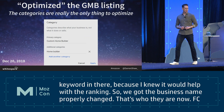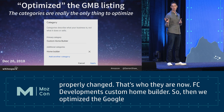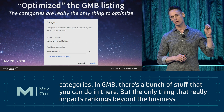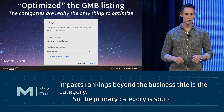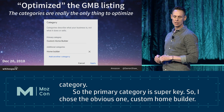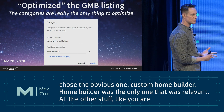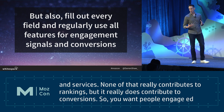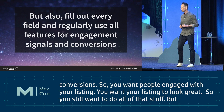We then optimized the Google listing, which is mostly just categories. In GMB, the only thing that really impacts rankings beyond the business title is the category, so the primary category is super key. I chose 'custom home builder' and added 'home builder' as an additional category. All the other stuff - description, services - none of that really contributes to rankings, but it does contribute to conversions. No one has really shown ranking boosts from those other fields.